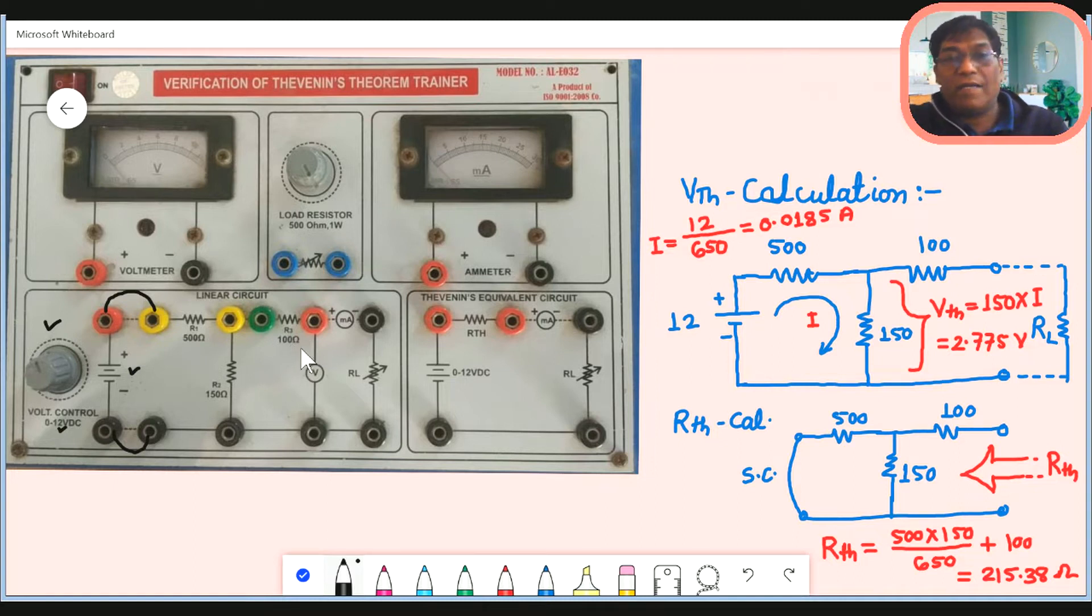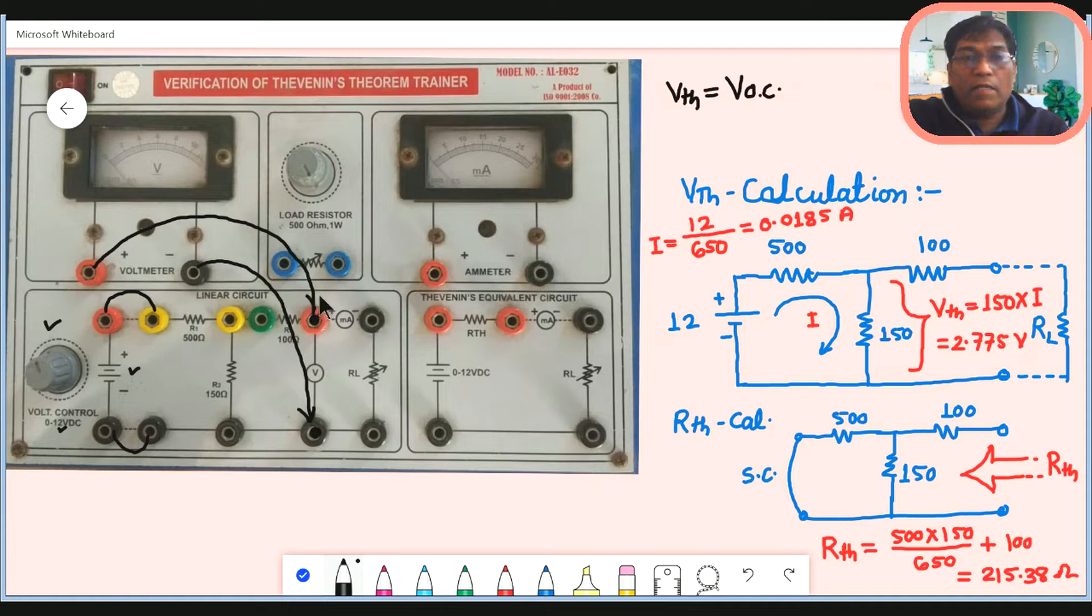What do we need to do in Thevenin's theorem? Practically things are very easy. We have to measure VTH, and this VTH is open circuit voltage VOC. At this point and between this point, we can connect this voltmeter. Connect the red wire here, and black wire here below. By connecting wires, VTH can be measured. Whatever reading comes in the voltmeter, that is VOC, VTH, the Thevenin voltage which equals open circuit voltage.